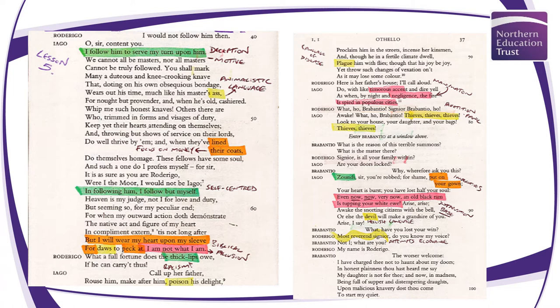Then we get the line 'I am not what I am,' which is a direct biblical allusion. In the book of Exodus, God says 'I am what I am,' revealing his identity. By inverting this, Shakespeare is revealing that Iago is the opposite of God — he is the devil, that malcontent. Shakespeare was writing around when the King James Bible was translated in 1611, and he uses this kind of allusion a lot.